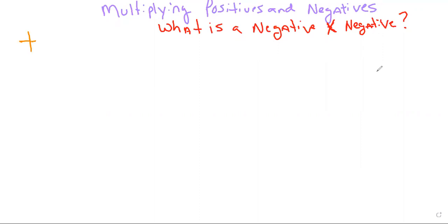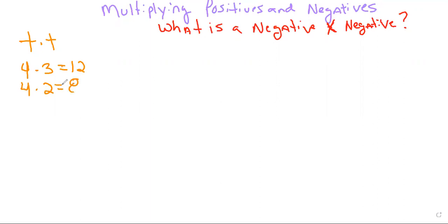We're going to start with a positive times a positive, and work our way down to bringing in some negatives. So let's start with just a basic pattern. I've got a positive four times a positive three, and we know that answer is 12. Then positive four times two — that answer is eight. And four times one — that answer is four.